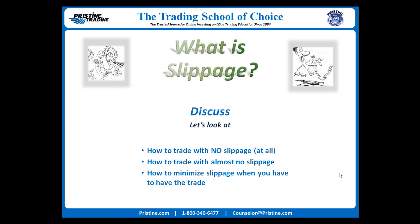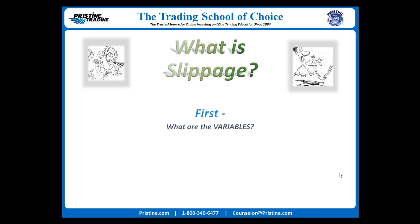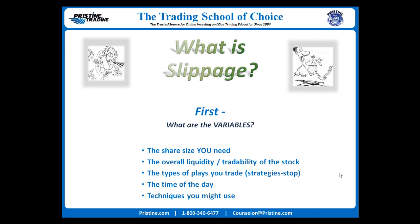Let's look at all the variables involved. The biggest variable that will determine what techniques are needed to minimize slippage is simply the number of shares you want to buy. Traders with smaller accounts buying 10, 50, or 100 shares will not often encounter slippage problems at all. Traders with larger accounts may be buying several thousand shares and will have slippage as a primary concern.